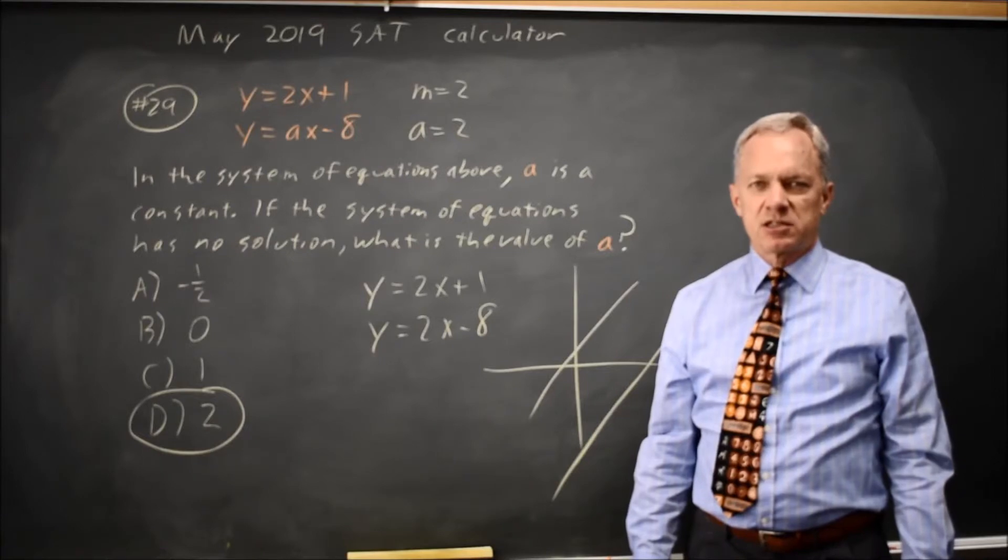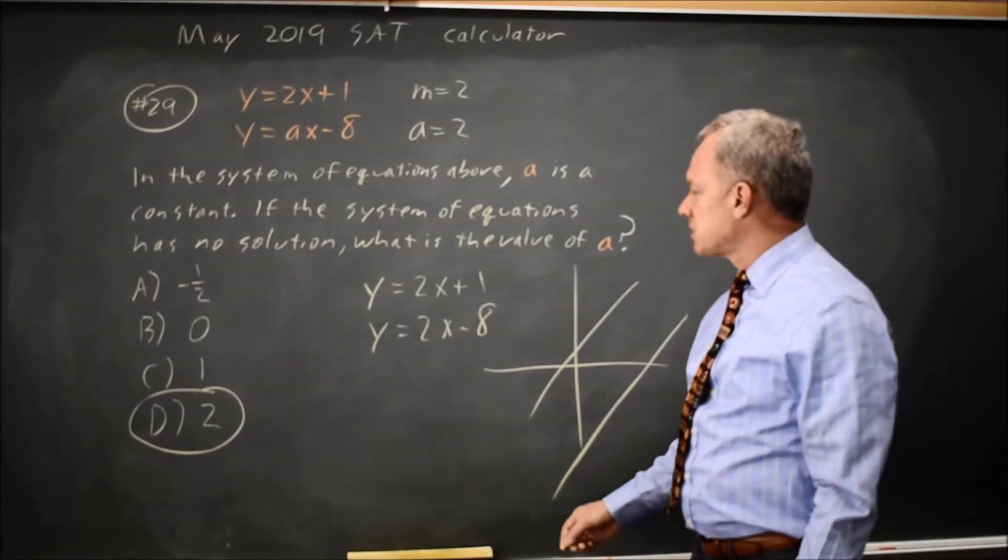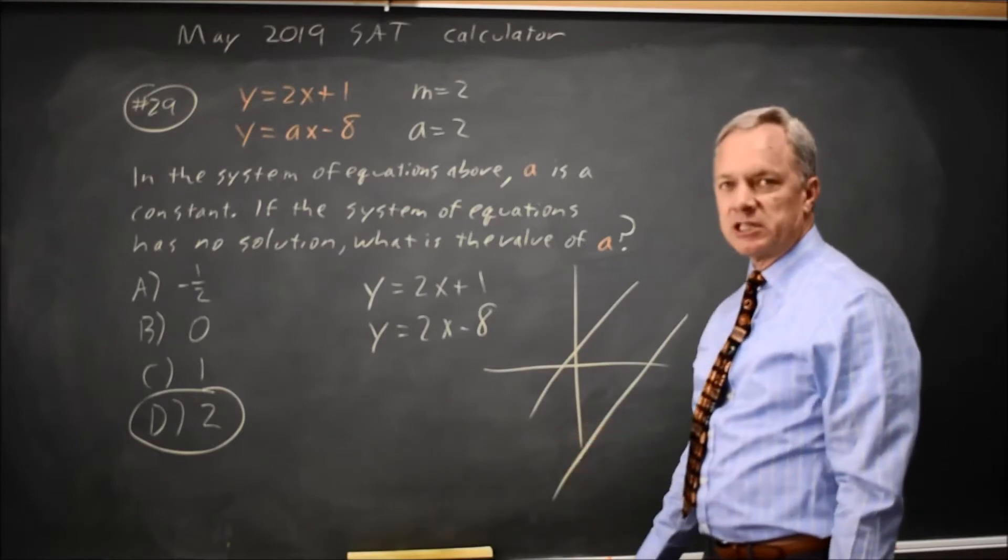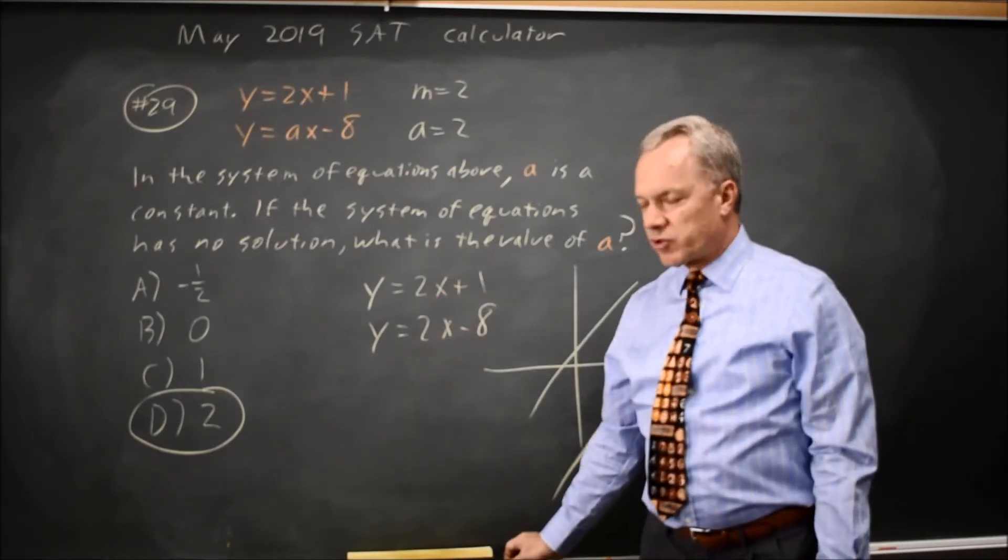Parallel lines never intersect, and the solutions of a system are the points of intersection. So it makes sense that parallel lines have no solution, and parallel lines, of course, have the same slope, which confirms our answer.